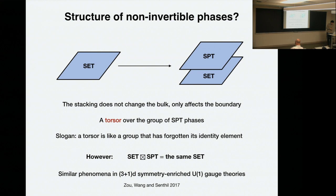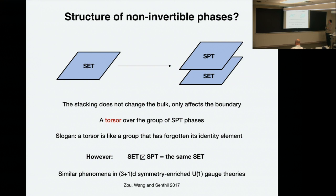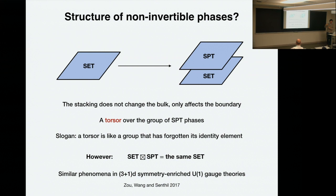So this is one problem that I want to address. And then there's a similar phenomenon in 3+1, for gauge series. To clarify the slogan: a torsor means there's an abelian group that acts transitively — you can go from one element to another by adding an element of the abelian group, but you don't know which one is the identity. The physics here is that all you do is stack an SPT on top of the SET phase, but they're all in some sense SET to begin with.